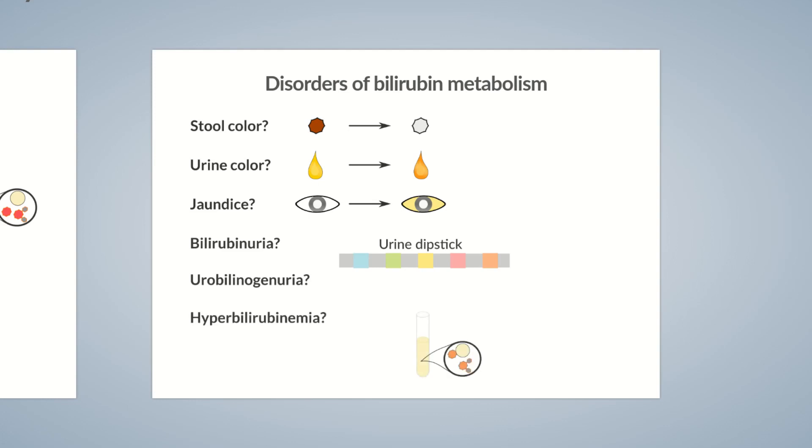Total and direct bilirubin can be measured in serum. Here, it's interesting to note how high bilirubin levels are and how unconjugated and conjugated bilirubin relate to one another.